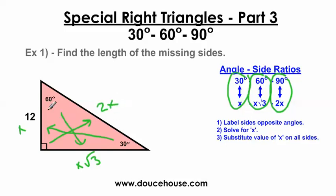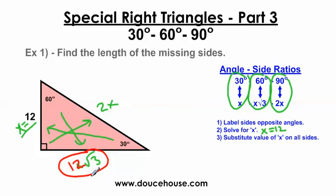Now let's solve for x. This side is equal to x, and it's also equal to 12. Since they're the same thing, I can set these two things equal to each other, so x is 12. I know x is 12, so the long leg is 12 square root 3. This is an acceptable answer — you can plug it in your calculator to make it a decimal if you want, but 12 square root 3 is fine. And since x is 12, the hypotenuse is 2 times 12, which is 24. So the hypotenuse is 24 and the long leg is 12 square root 3.